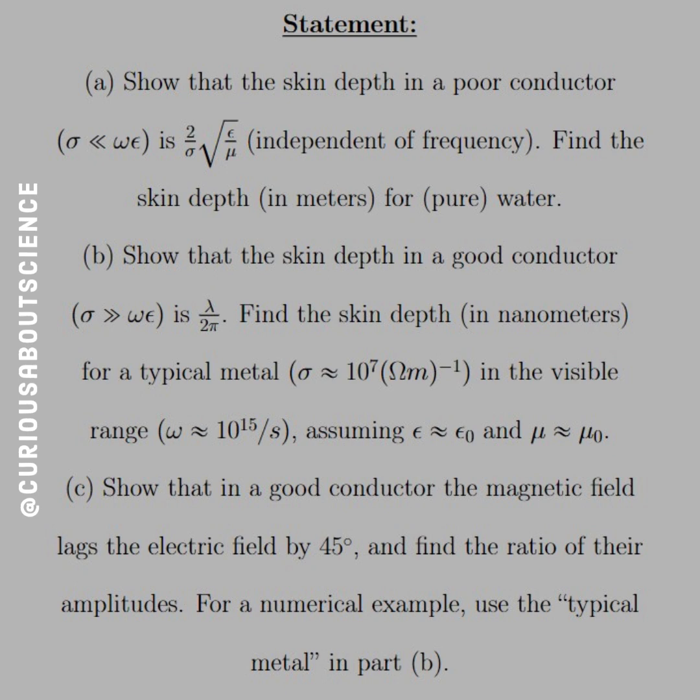And part C, show that in a good conductor, the magnetic field lags the electric field by 45 degrees, and find the ratio of their amplitudes. For a numerical example, use the typical metal in part B. Okay, whew, this is going to be fun. It's not too long, but the math can look a little hand-wavy, so we'll go ahead and see what we need to know.